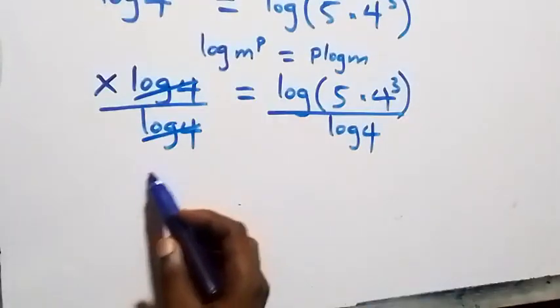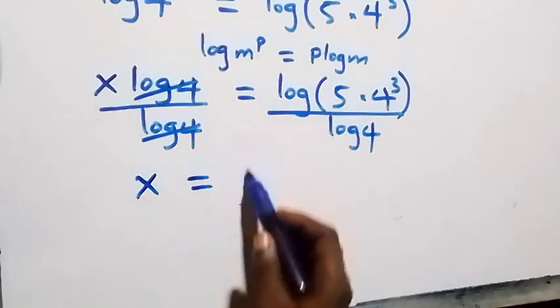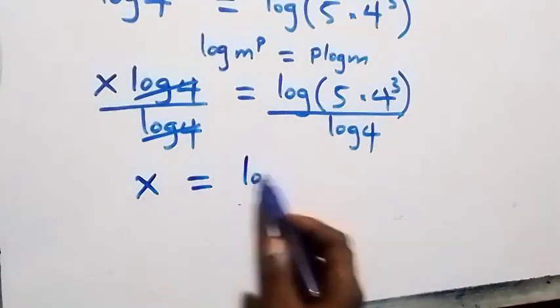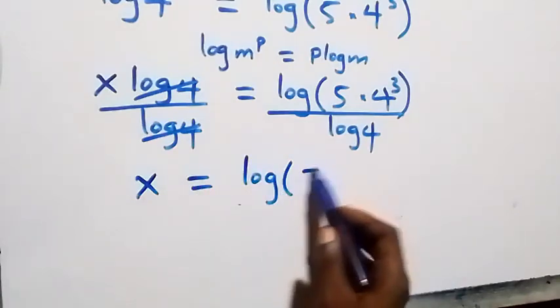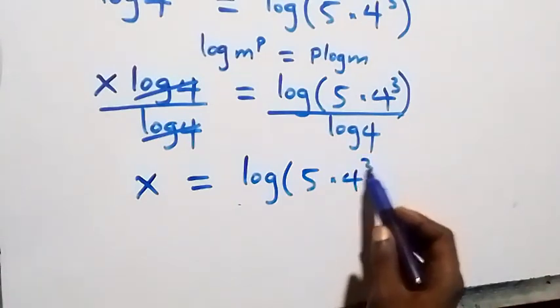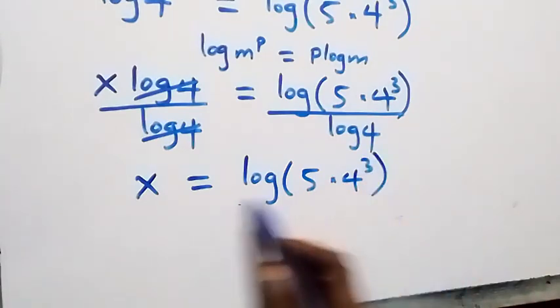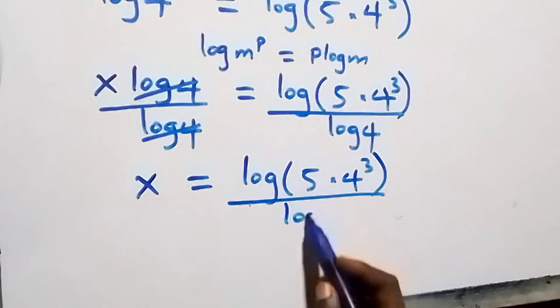After dividing, log 4 cancels on the left side, and we have x equals log of 5 times 4 raised to power 3, all over log 4.